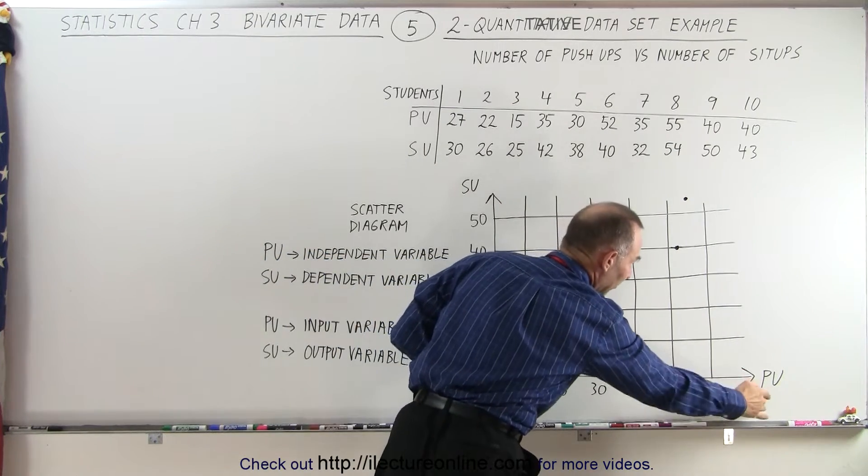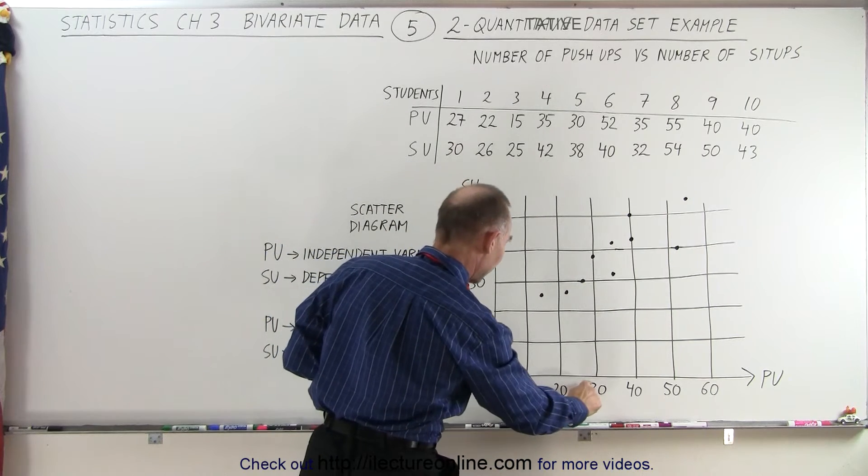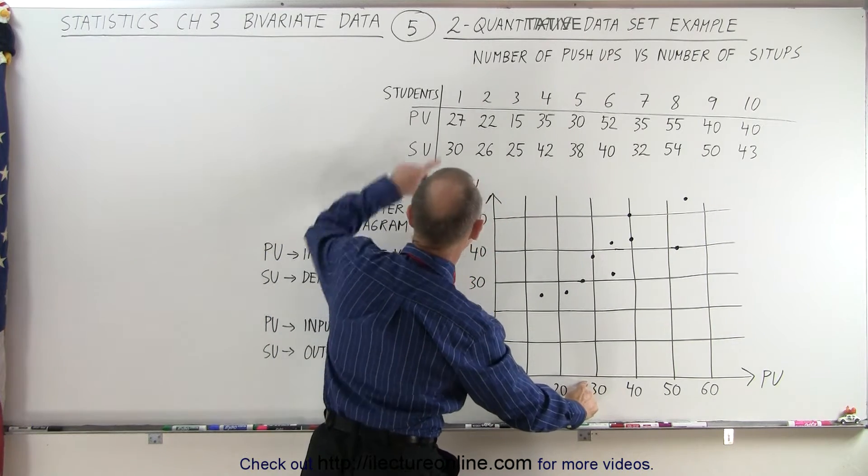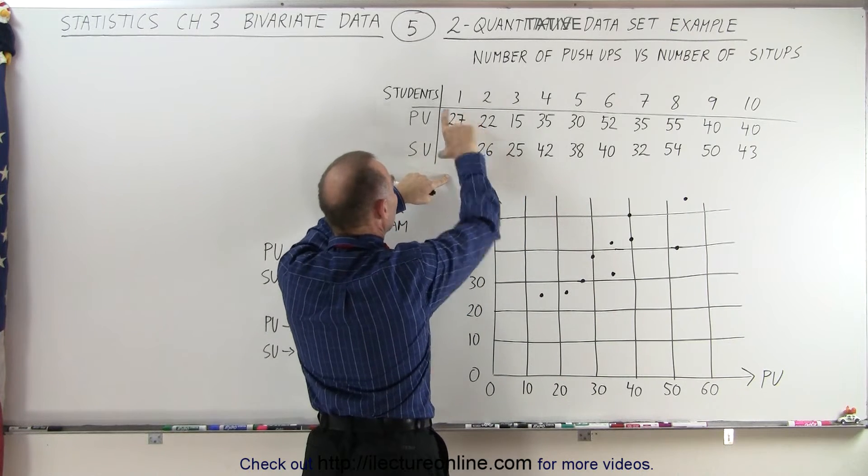On the horizontal axis here, we have push-ups. On the vertical axis, we have sit-ups. So we look for 27, which is right about here, and 30, which is right there. So that's the data point consistent with these two numbers.